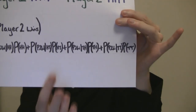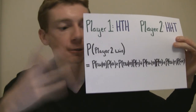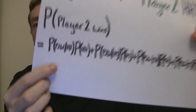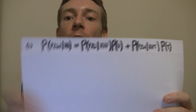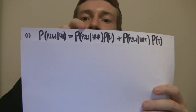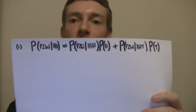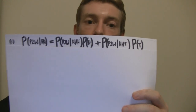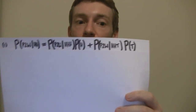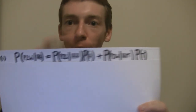The probabilities of heads-heads, heads-tails, tails-heads, and tails-tails are each a quarter, so you can fill those in straight away. We need to work out the other terms. Let's work out the first one: the probability that player two wins given heads, heads. We're going to use that rule of probability again. There are two scenarios: the probability that player two wins given heads-heads-heads turns up, times the probability of heads, plus the probability that player two wins given heads-heads-tails turns up, times the probability of tails.